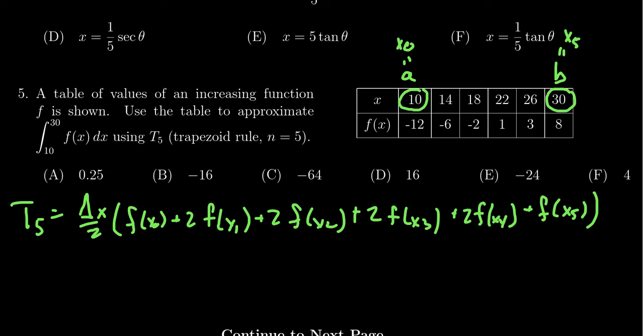At some point we need to identify what is delta x. Delta x is going to be the last value b minus the first value a over 5 in this case. In general it would be over n, but if we use the specifics of this question we're going to get 30 minus 10 over 5.